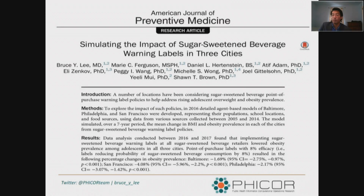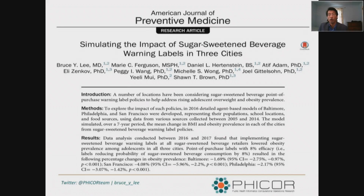During our interactions with the Baltimore Health Department, they mentioned a policy being considered — introducing sugar-sweetened beverage warning labels to different food locations. Such a label would say that sugar-sweetened beverages are associated with different health issues. Such a label had been introduced in San Francisco and was being considered in other cities. This was an opportunity to test this possible policy intervention, leading to a study ultimately published in the American Journal of Preventive Medicine.